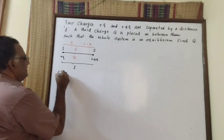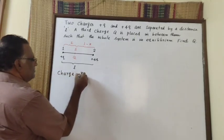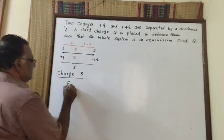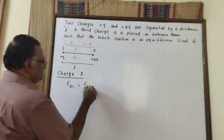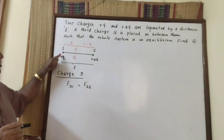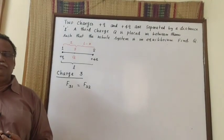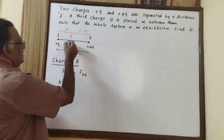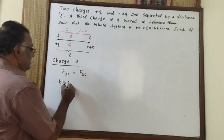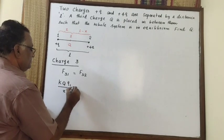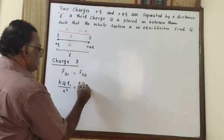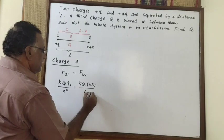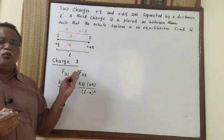Now we will try to estimate the value of x for charge number 3. For equilibrium, the force on charge 3 due to charge 1 is equal to the force on charge 3 due to charge 2. Using Coulomb's law: kQ·q divided by x squared equals kQ·4q divided by (L minus x) squared.